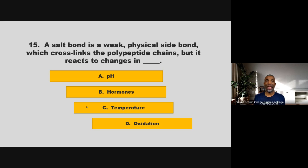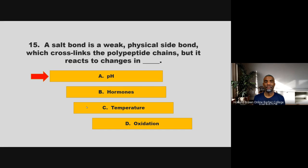A salt bond is a weak physical side bond which cross-links the polypeptide chains, but it reacts to changes in blank. pH, hormones, temperature, or oxidation? If you chose A, pH, you are correct.